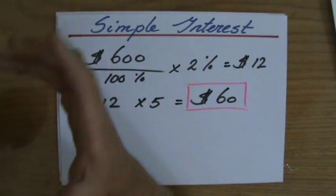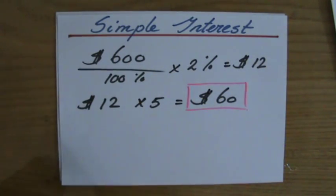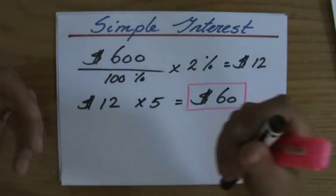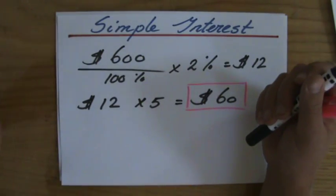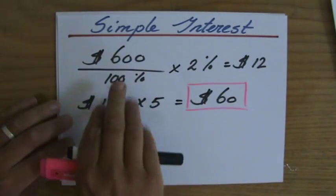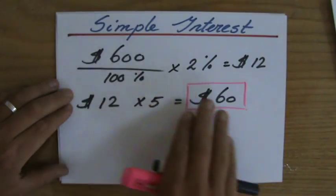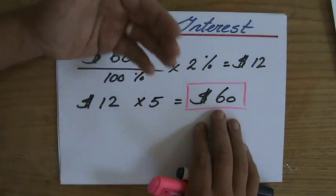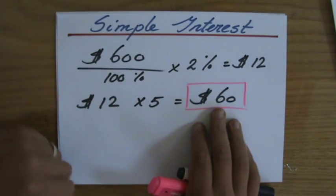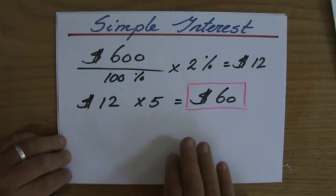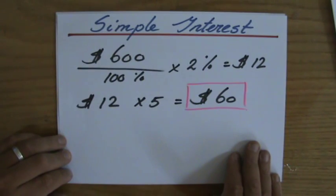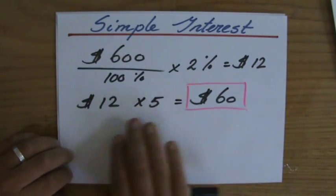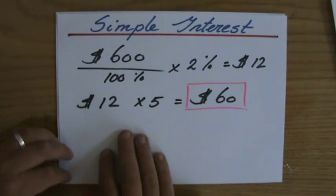Now perhaps in a slightly different question they could ask how much money does John have at the end. Then I should take six hundred plus the interest he receives — so plus sixty — meaning John will have six hundred and sixty dollars in his possession.